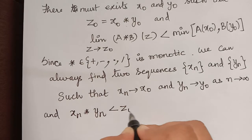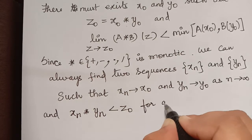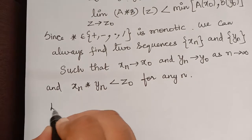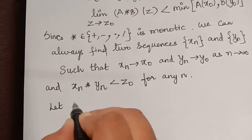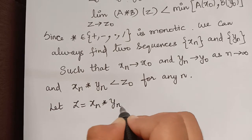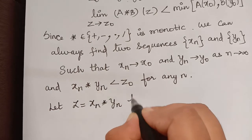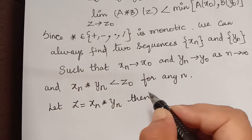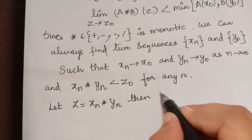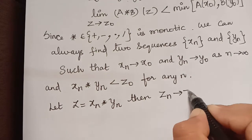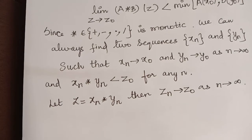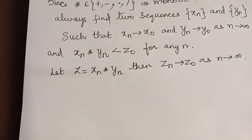We can also say that xₙ★yₙ is less than z₀ for any n. Now let z = xₙ★yₙ, so zₙ = xₙ★yₙ. Since xₙ → x₀ and yₙ → y₀, we have zₙ → z₀ as n tends to infinity.